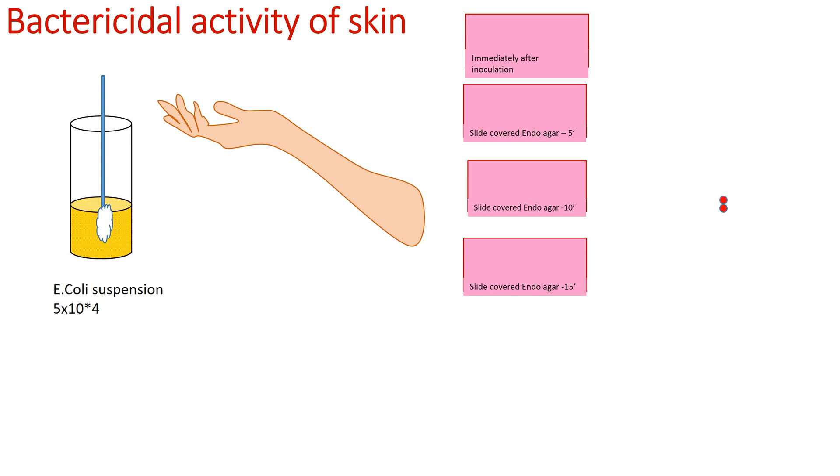First step of this test is to transfer the suspension by sterile swab onto the skin of the anterior surface of the forearm of the patient. After then, inoculate on the endo-agar slide immediately.